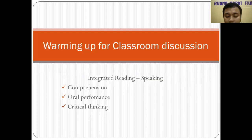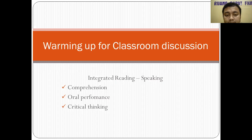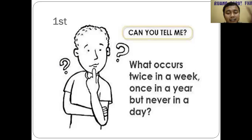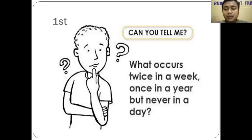That's our first meeting. Please do this warm-up for classroom discussion — you can see the assignment part. It's simple, just for a warm-up: please answer the question using your own words, type a short one-to-two sentence answer. The question is: 'What occurs twice in a week, once in a year, but never in a day?' Please read it and submit your answer in the assignment on our forum.